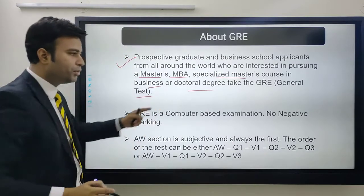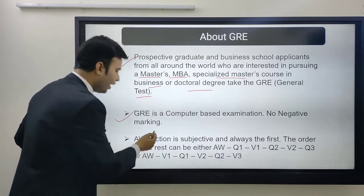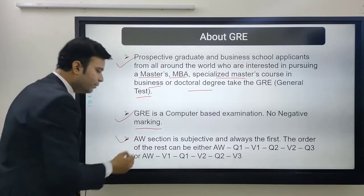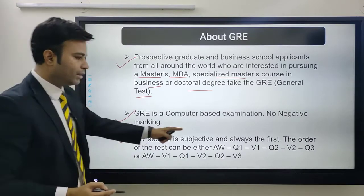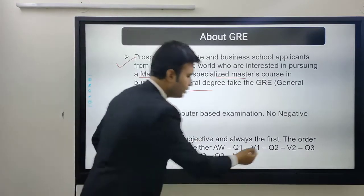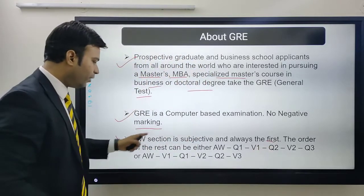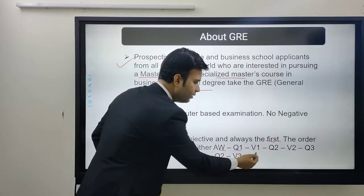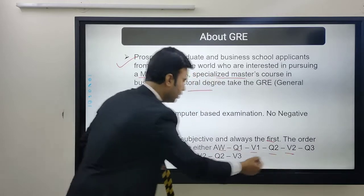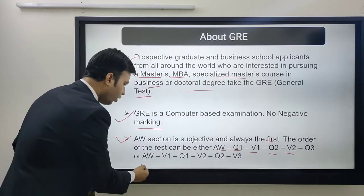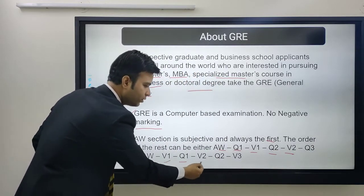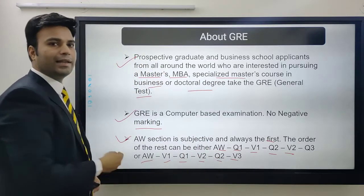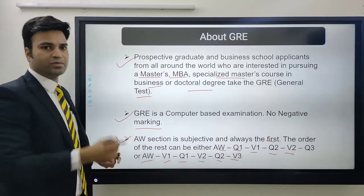GRE is a computer-based examination with no negative marking. The AW section is subjective and always comes first. The order of the remaining sections can be either AW, Q1, V1, Q2, V2, Q3, or AW, V1, Q1, V2, Q2, V3. This is the kind of order the exam can follow.